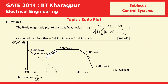Question 6. The Bode magnitude plot of the transfer function G(S) = K × (1 + 0.5S)(1 + AS) / S(1 + S/8)(1 + BS)(1 + S/36) is shown. Note that minus 6 dB per octave equals minus 20 dB per decade. The value of A divided by BK is to be found from the Bode magnitude plot shown in the figure.